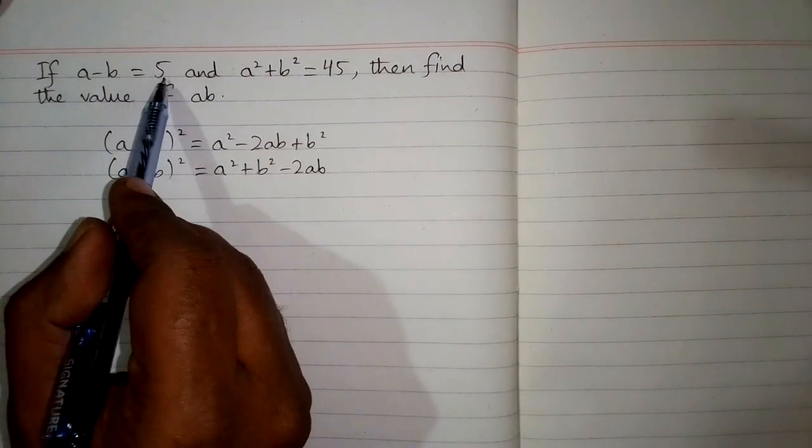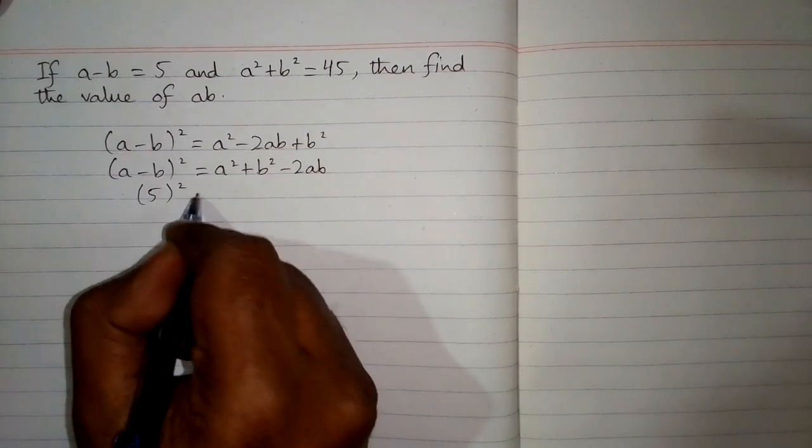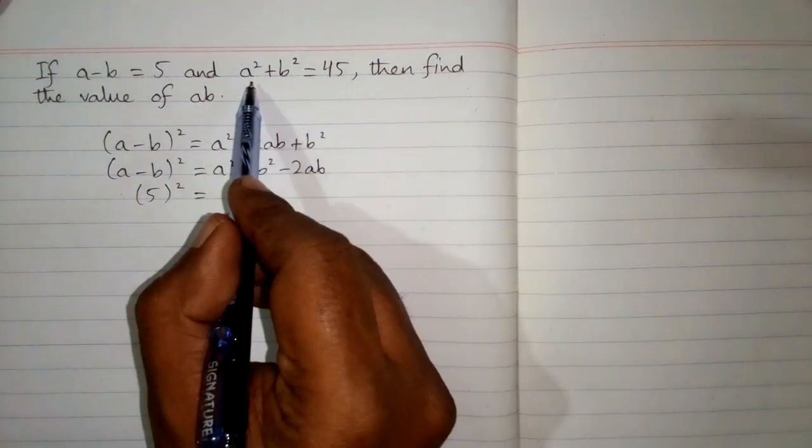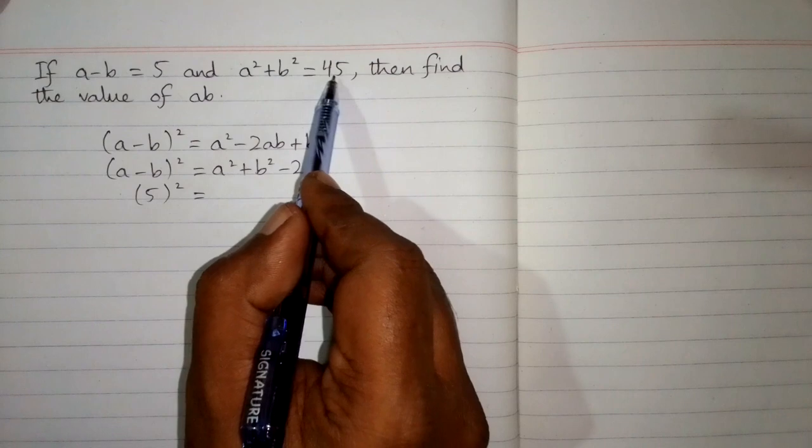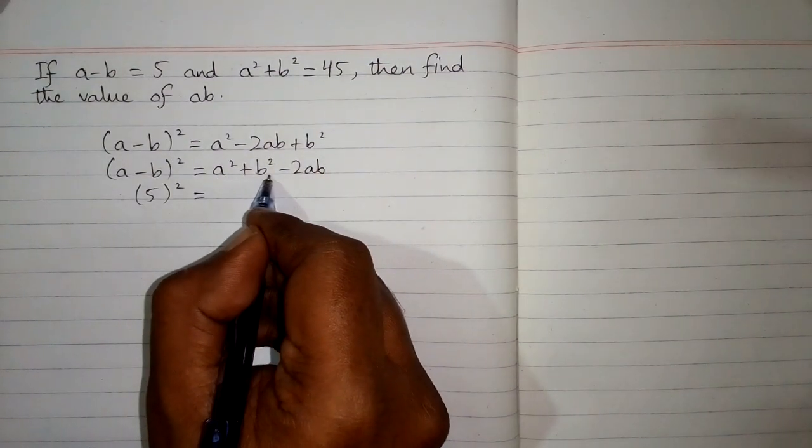The value of a minus b is 5, so we can put 5 in place of a minus b. We can see that the value of a square plus b square is 45, so we can put 45 in place of a square plus b square.